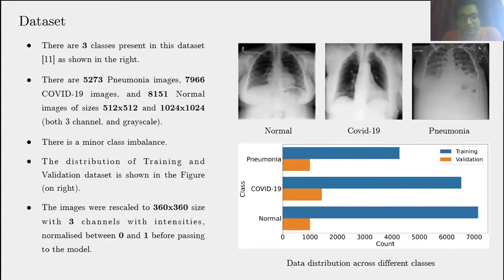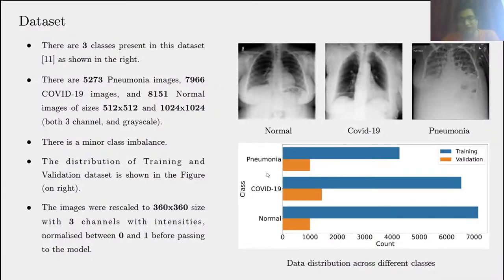There are three classes present in this dataset. There are 5,273 pneumonia images, 7,966 COVID-19 images, and 8,151 normal images of different shapes and sizes — including both three-channel and grayscale formats. So there was a mix of data. From the data distribution, we can see that there is a minor class imbalance, and the distribution of training and validation is shown in this slide.